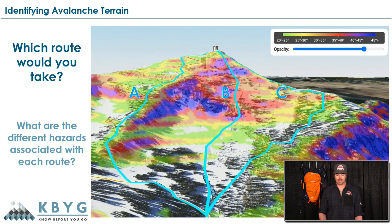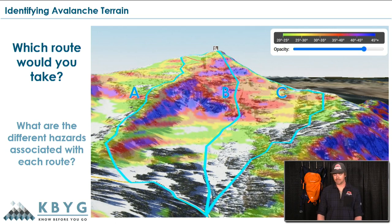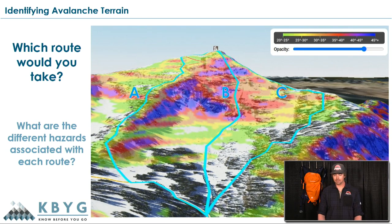Option B takes us right up the center — you might have people skiing down from above you, or you might trigger an avalanche on the side of the slope that breaks wide and takes you out with it. Not an option I would recommend. Looking at route C, we're gaining the ridge through low angle trees — pretty thick trees — and then just climbing that ridge all the way to the top.